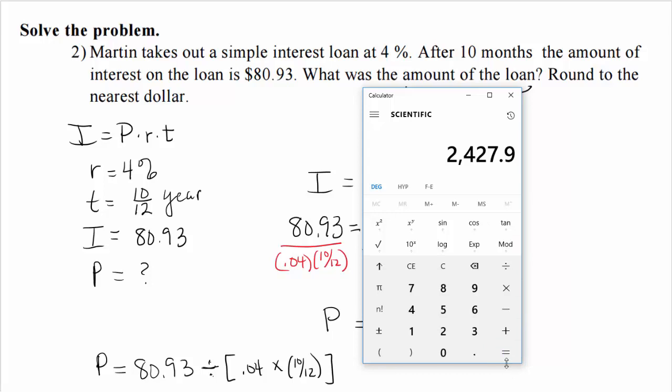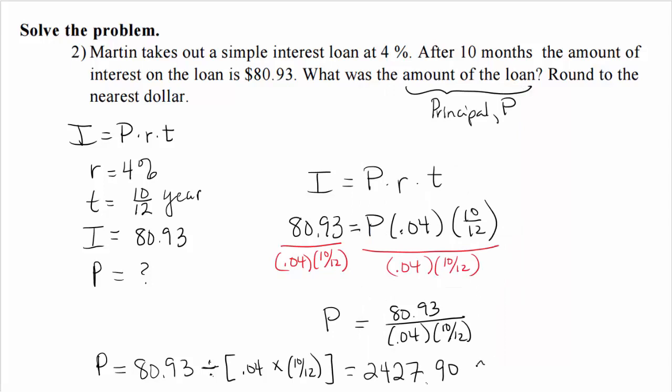We get $2,427.90. Since we were asked to round to the nearest dollar, the answer is approximately $2,428.